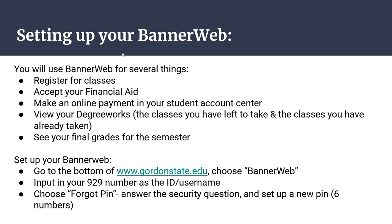The next thing is to set up your BannerWeb account. BannerWeb is used to register for classes, accept your financial aid, make online payments through your Student Account Center, view your DegreeWorks, and see your final grades for the semester. To set it up: go to the Gordon website, scroll to the bottom and choose BannerWeb, input your 929 number, then choose 'Forgot PIN' to set up a new six-digit PIN and log in from there.